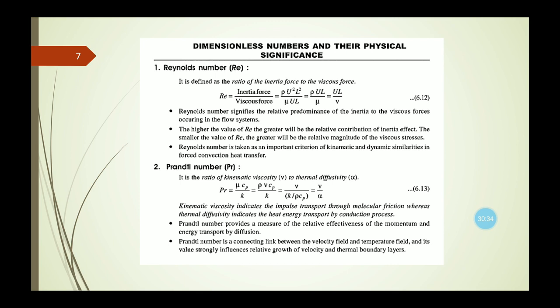The Prandtl number Pr is the ratio of kinematic viscosity to thermal diffusivity alpha, with formula mu·cp/k. Kinematic viscosity indicates impulse transport through molecular friction, while thermal diffusivity indicates heat energy transport by conduction. The Prandtl number provides a measure of the relative effectiveness of momentum and energy transport by diffusion. It is a connecting link between the velocity field and temperature field, and strongly influences the relative growth of velocity and thermal boundary layers.